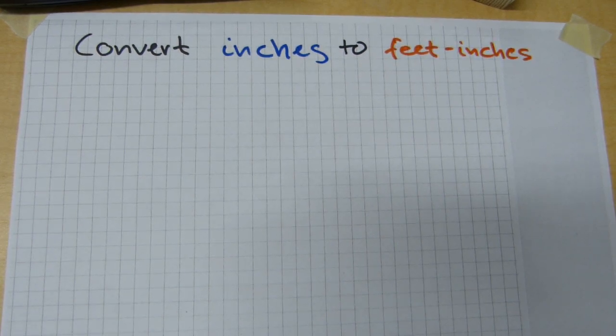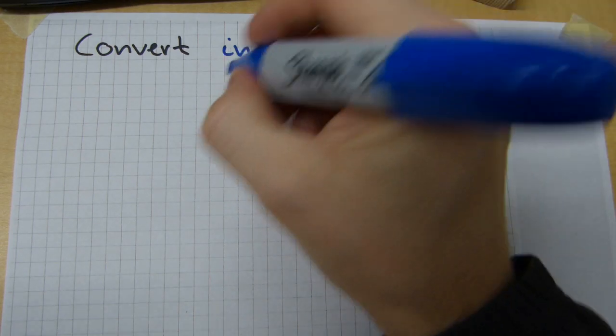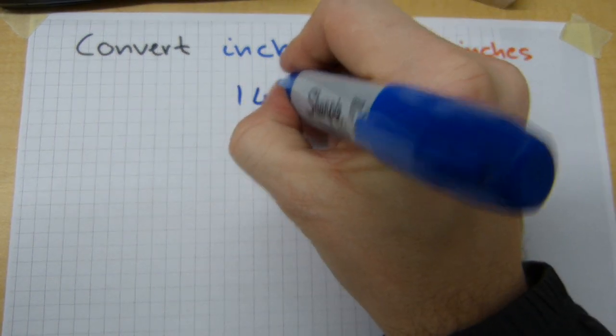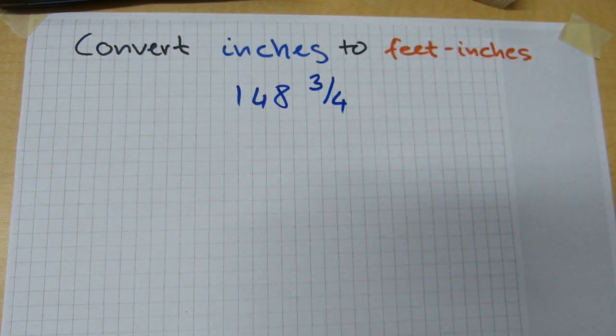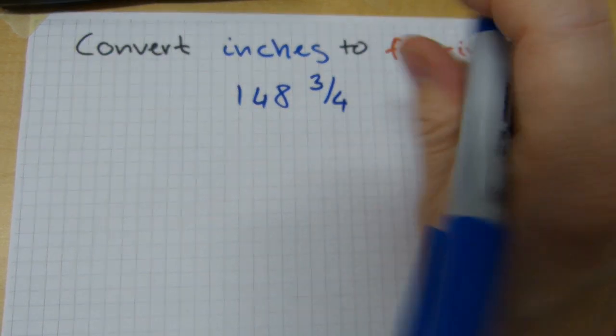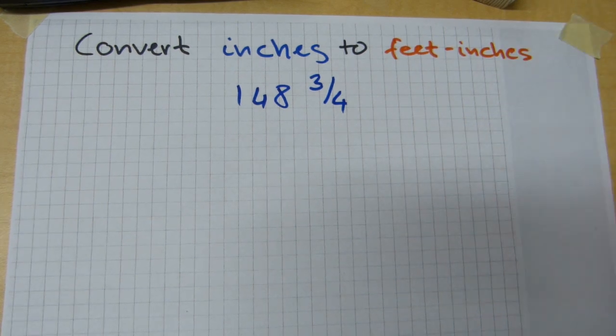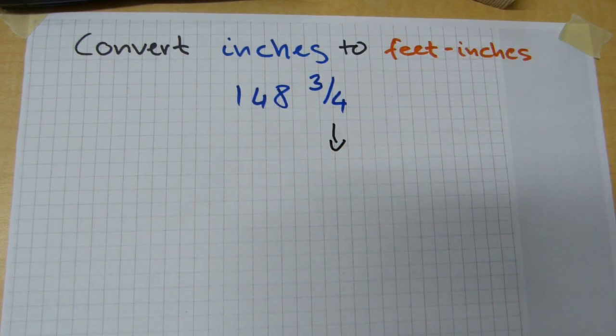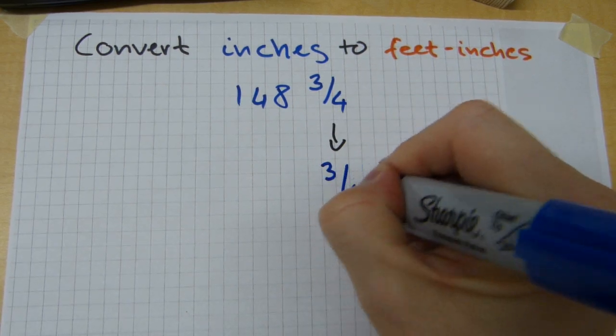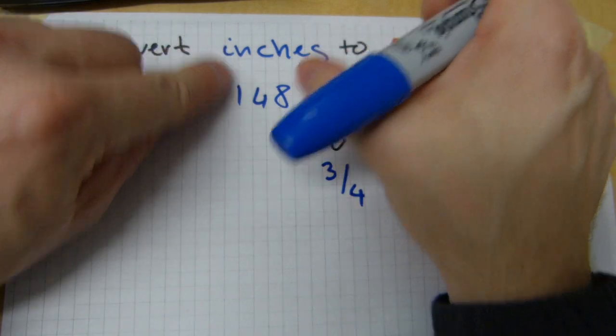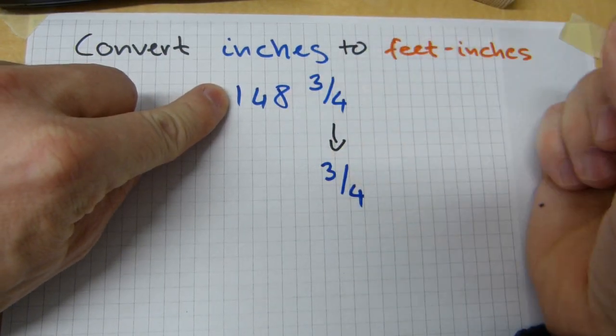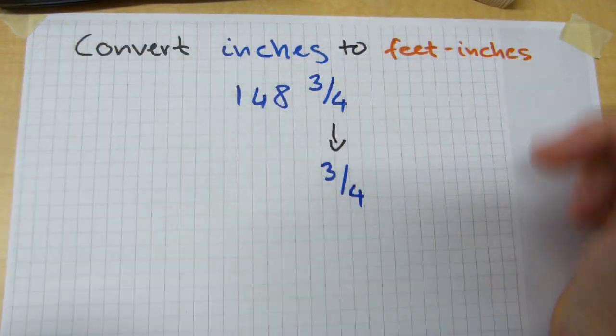A measurement to be converted could be 148 inches and 3 quarters of an inch. The figure 3 quarters of an inch just copies into the final answer, as is, it's gonna stay 3 quarters of an inch. There's nothing to convert on that one. We're splitting the inches, 148 of them, into so many feet and so many inches.